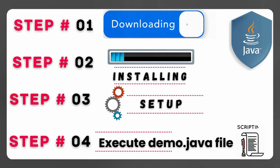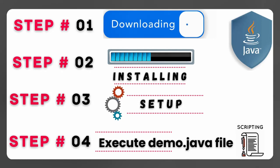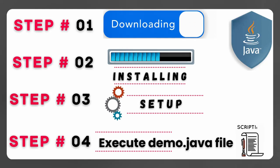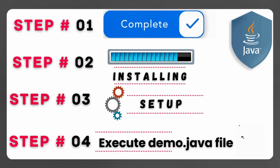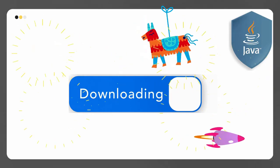This we are going to do in four steps. In step one, we are going to download the Java Development Kit software from the Oracle website. In step two, we are going to install that Java software on Windows 11. In step three, we are going to set some environmental variables. And in the last step, we are going to execute a small JavaScript to check whether the Java environment is perfectly working or not. Let's move on to the first step, that is download.